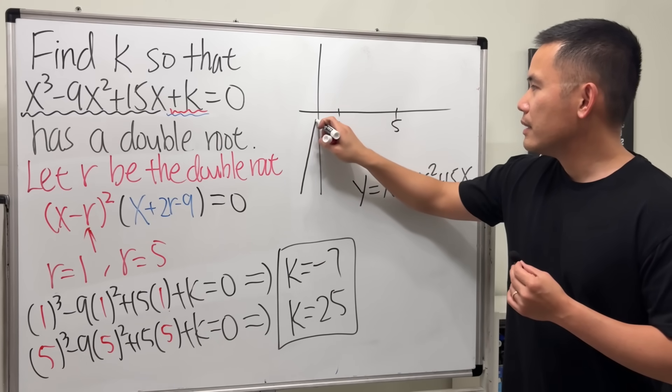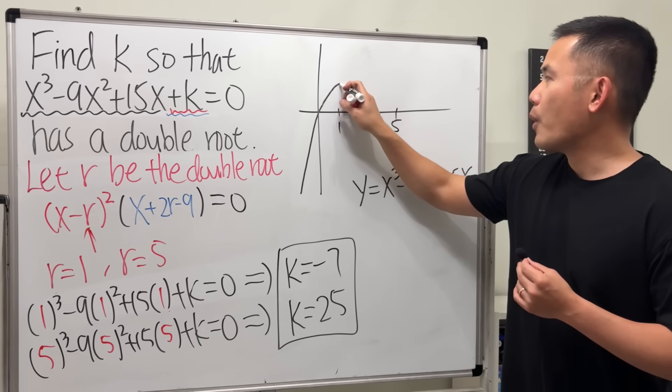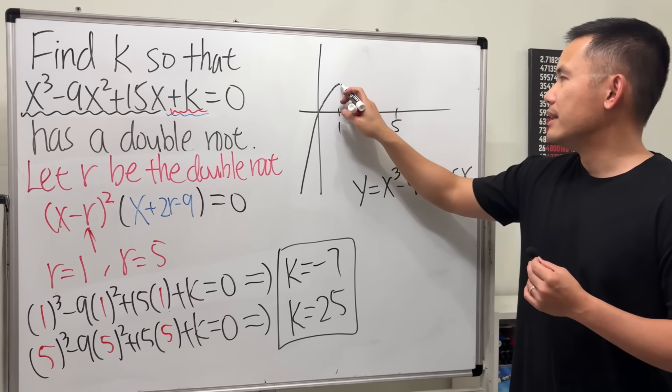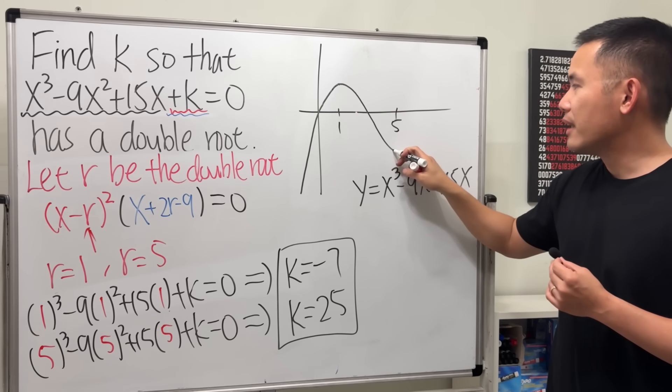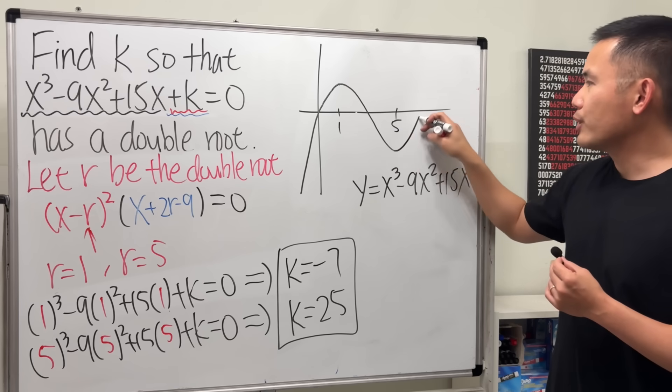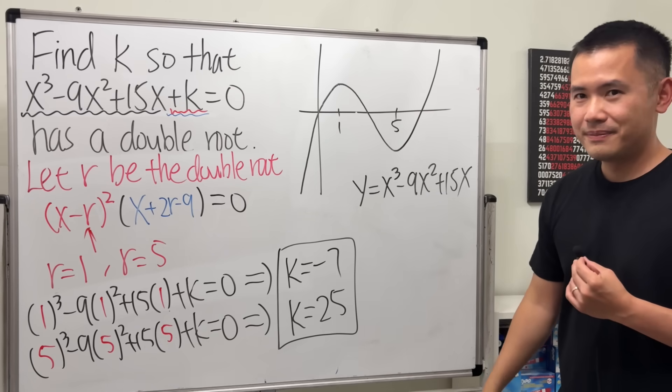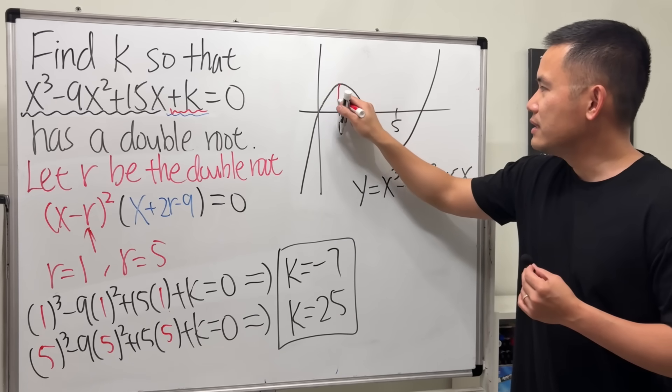And based on what we did to get the double root, it will be 1 and 5. So we must have 1 and 5. So what's going to happen is that the graph will look like this—go up, and then at 1 we have a local maximum, and then it has to come back down like this. And then at 5 it must be a local minimum and then go up something like this. Now let me ask you, what's this distance here?